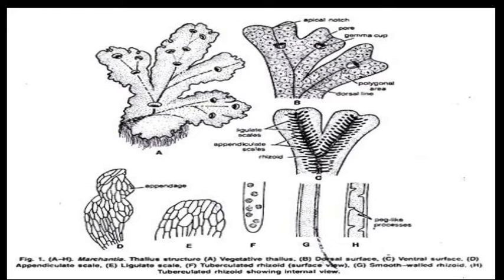Diagram C shows the ventral surface of the thallus, represented by ligulate scales, which are thick and multicellular. There are also appendiculate scales and two types of rhizoids: smooth-walled rhizoids and tuberculate rhizoids. These appendages are found on the ventral surface.